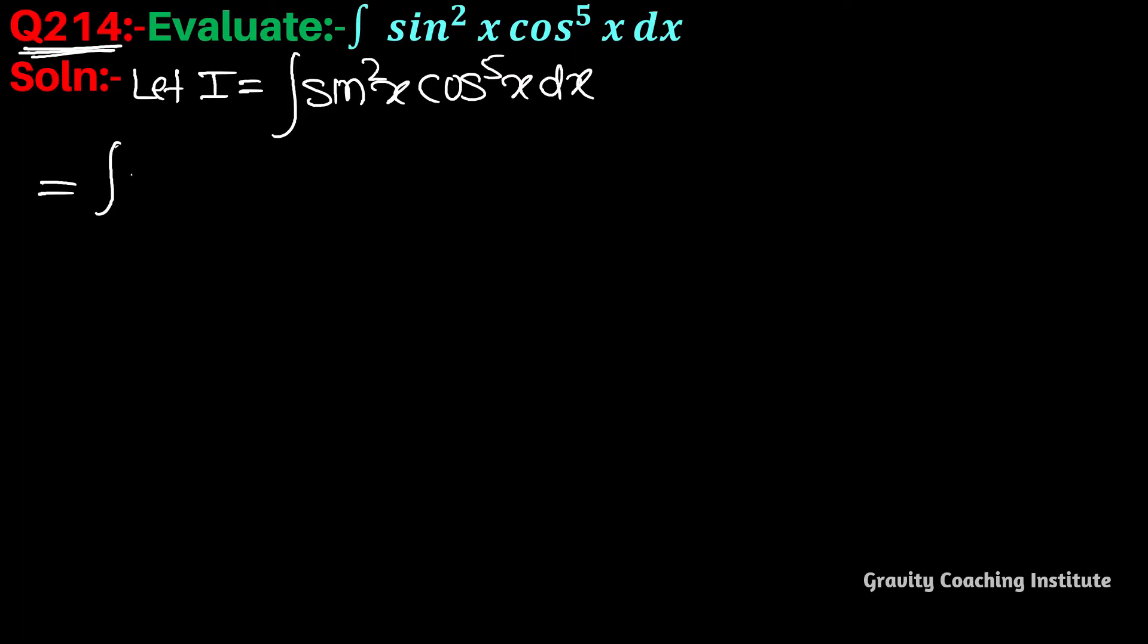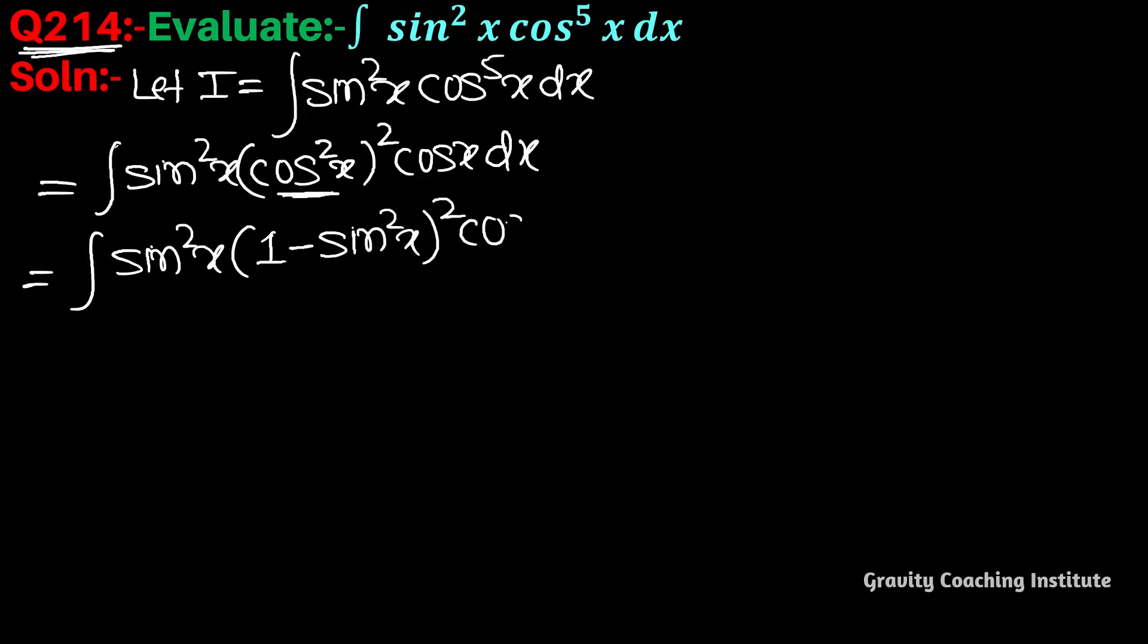We will expand the odd power. Cos has odd power, so we write this as cos²x whole square into cosx dx. Then we change cos²x to sine form: sin²x(1-sin²x)² cosx dx. Now we will differentiate sine x, putting sine x equal to t.